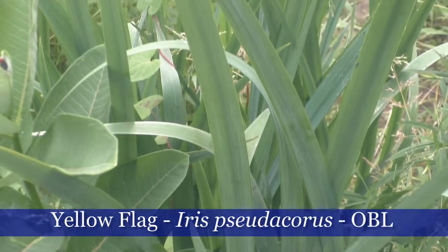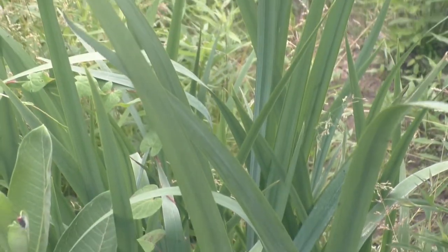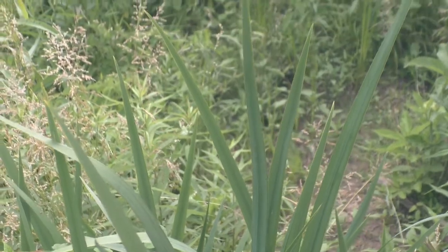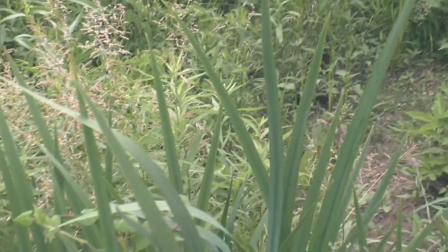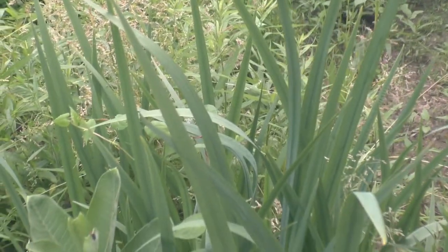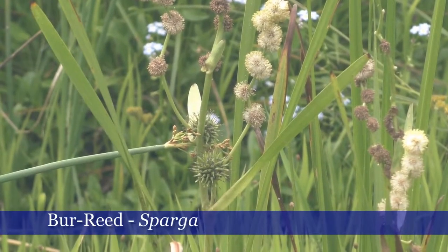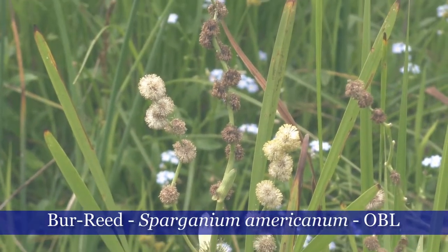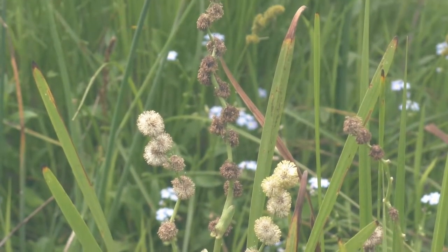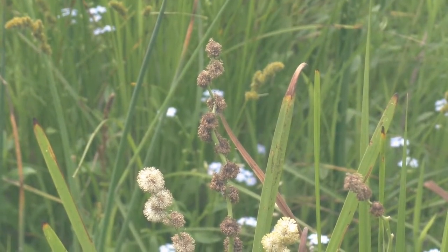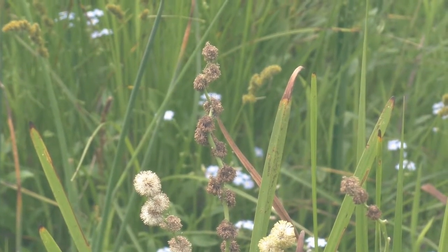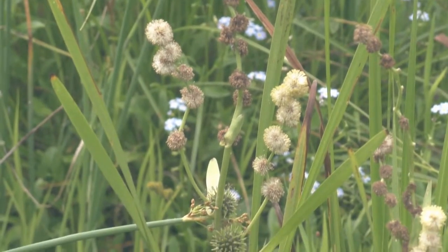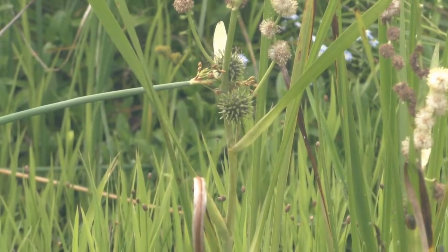Yellow flag looks similar to cattails, but its leaves are lined. Instead of a seed head, it grows bright yellow flowers which bloom in early to mid-summer. Another plant with long, sword-like leaves is burr reed. This wetland plant has unique flowers which grow on a zigzag stalk. Later in summer, these flowers will appear rubbery and spiky.